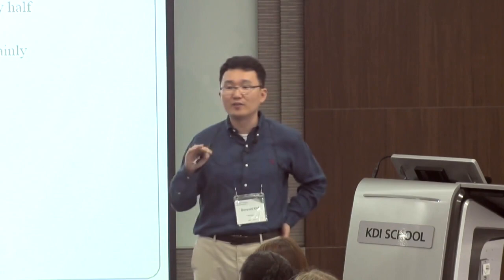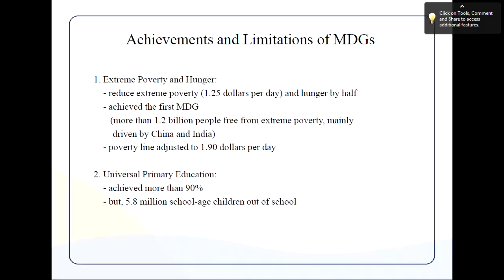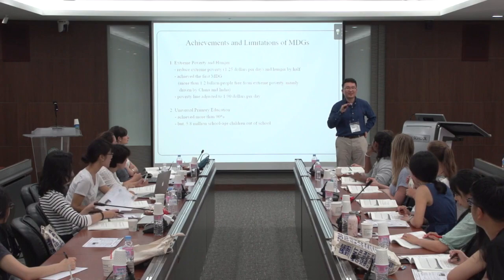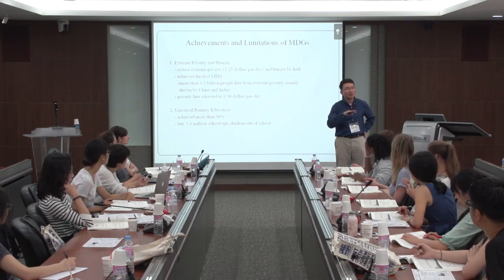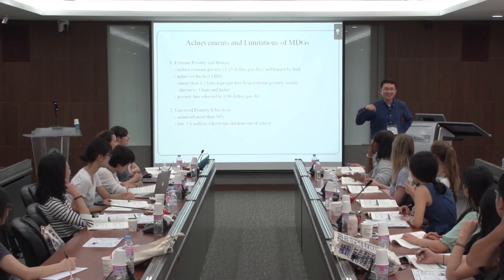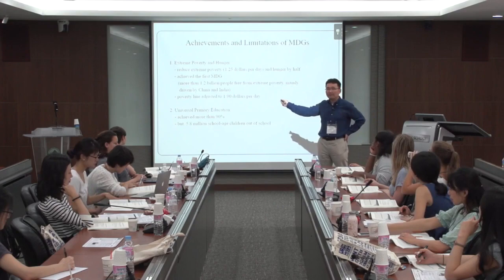We realized $1.25 was still too low to meet basic human needs, so the World Bank increased the extreme poverty line to $1.90 per day. It's expected that in a couple of years, they may adjust it again to $2 per day, which is easier to communicate. This is the definition used for MDG number one.